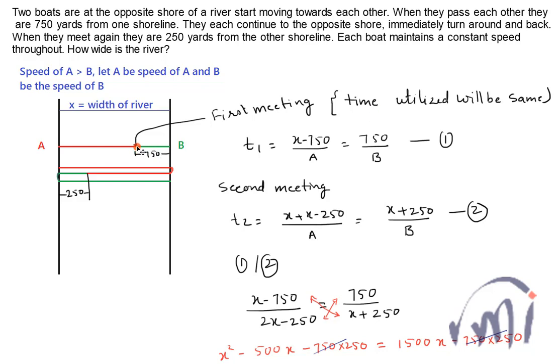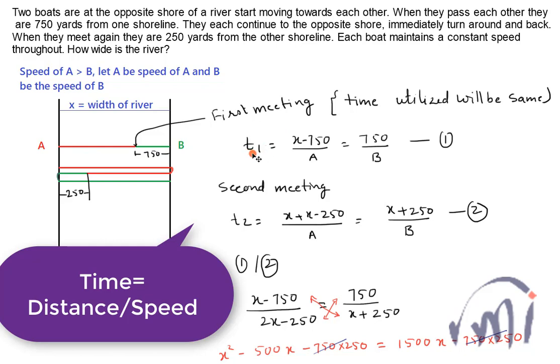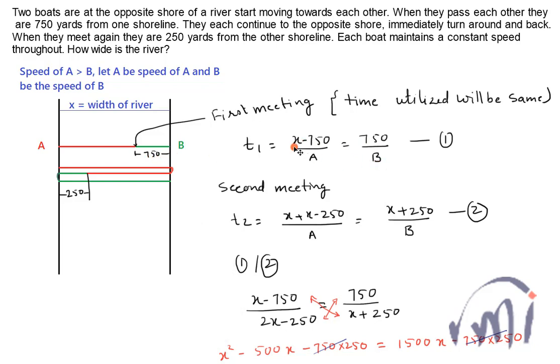Here they are meeting for the first time. When they meet here the time used by both A and B is same. The time utilized by A will be the distance traveled by A divided by the speed of A. The speed of A I have assumed as A and speed of B as B. So time taken by A will be x minus 750 divided by A, and this time will also equal 750 divided by B. So x minus 750 divided by A equals 750 divided by B. This is my first equation.